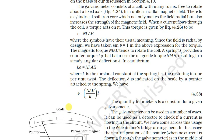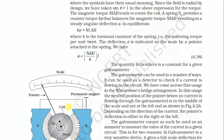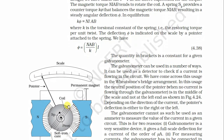The magnetic torque NiAB tends to rotate the coil. A spring provides a counter-torque kφ that balances the magnetic torque NiAB, resulting in a steady angular deflection φ. So kφ = NiAB. Here k is the torsional constant of the spring — the restoring torque per unit twist. The deflection is indicated on the scale by a pointer attached to the spring, giving φ = NAB·i / k.